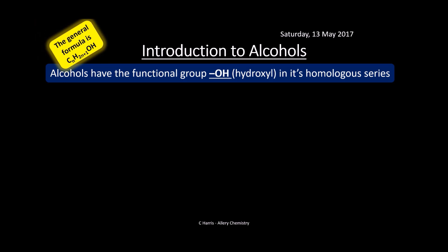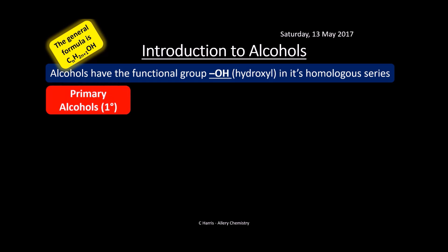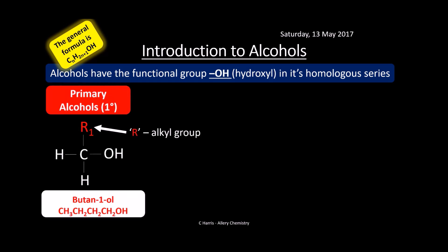Let's have a look at an introduction to alcohols. Alcohols have the functional group OH — that's a hydroxyl group. It's a homologous series with the general formula CₙH₂ₙ₊₁OH. Make sure you can use that formula. They come in different types; the first is a primary alcohol, normally given the 1° symbol — that doesn't mean temperature, that means primary.